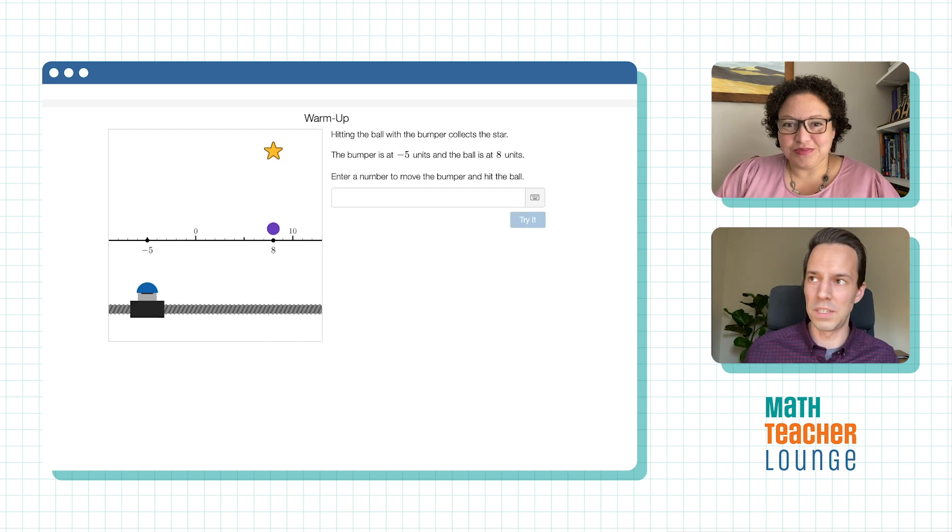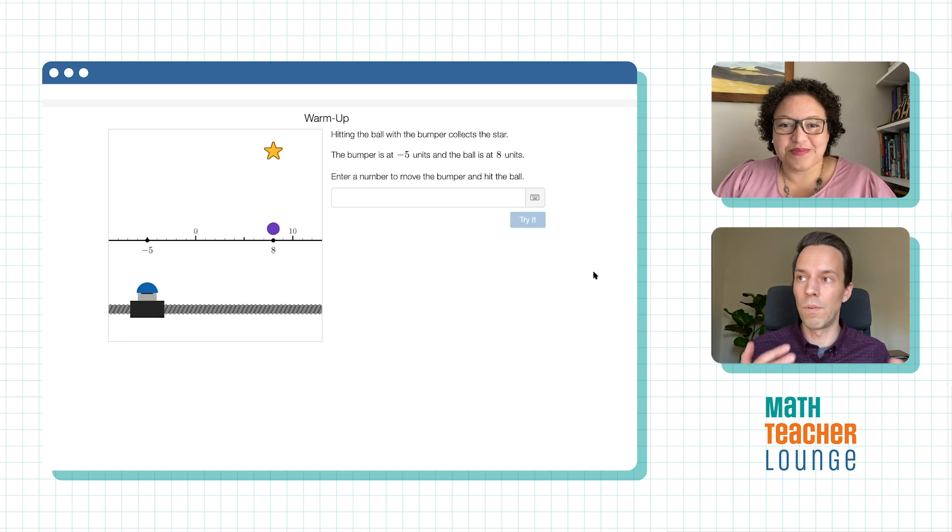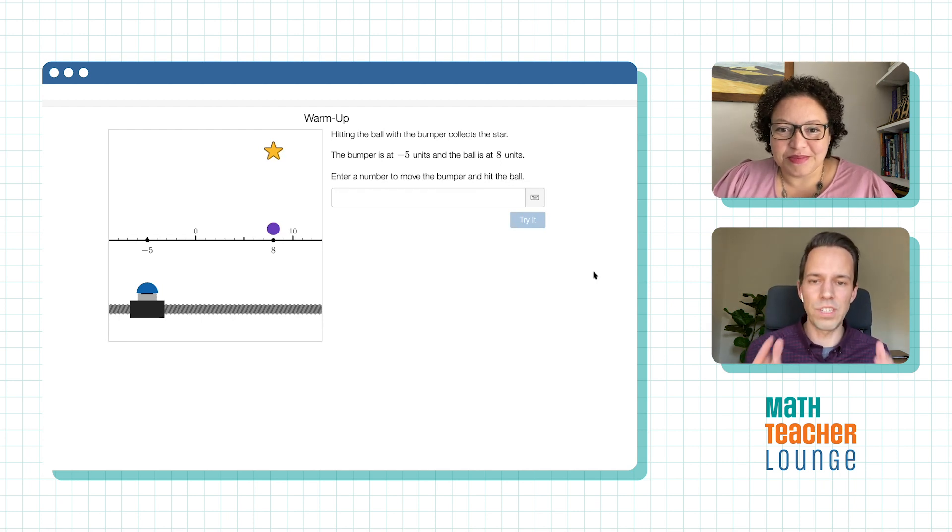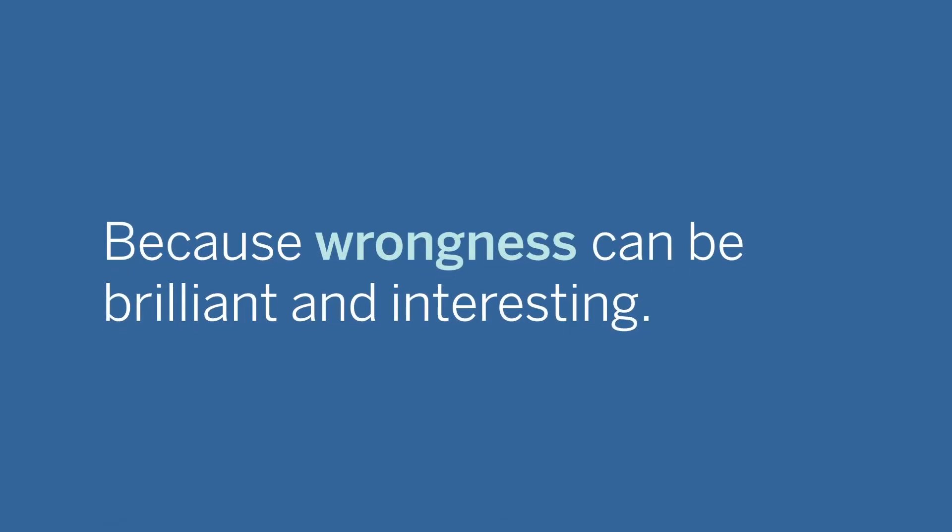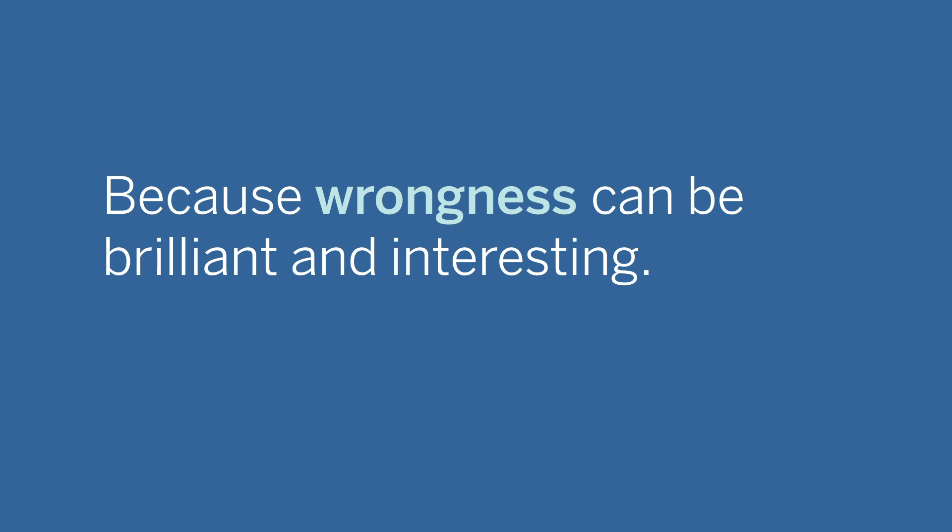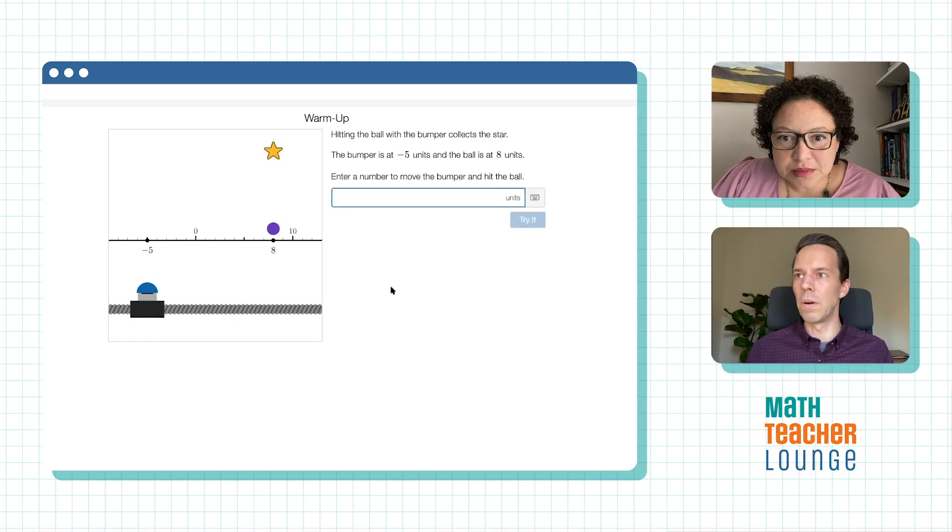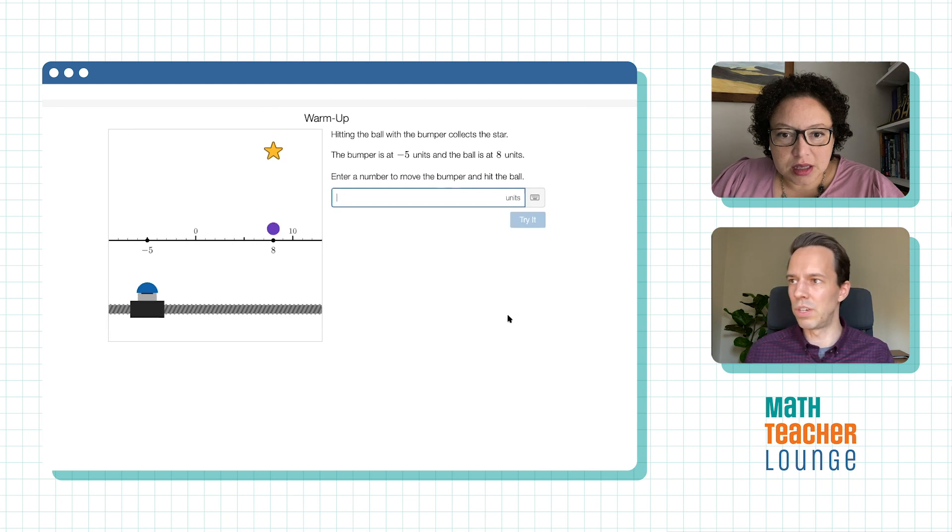So this is the curriculum that Desmos is building. We're collaborating with Amplify also on a curriculum that offers, I think, students opportunities to be right and wrong in different, interesting ways. That's one of Desmos's five design principles because wrongness can be brilliant and interesting. Here's the game. You want to move that bumper over to hit that star? Just give me any kind of number you want to try it out here.